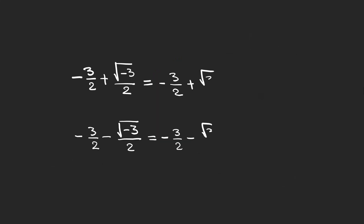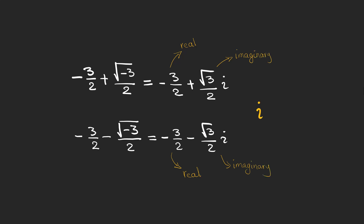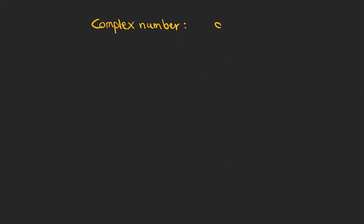So if we separate the square root of minus one and write it as i, we can have a real part and an imaginary part denoted by i, in which i is the square root of minus one. The general form of a complex number is a plus bi.